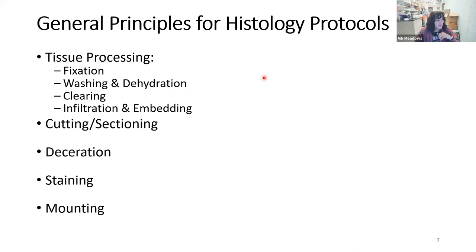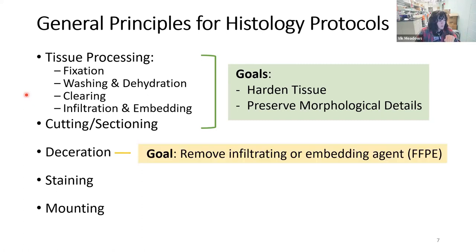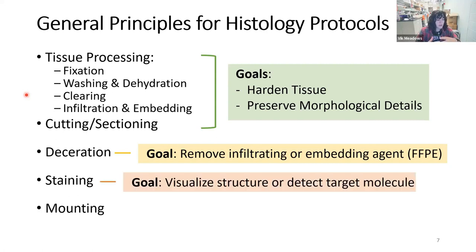General principles for histology protocols include tissue processing, which means fixing the tissue — freezing it in time as best you can. The goal of fixation and embedding is to harden the tissue and preserve the details at the moment you stopped it. Dewaxing is mostly for wax-embedded tissue — you remove the embedding agent because it will mask what you're trying to stain for. Staining is where you visualize different structures or detect target molecules.